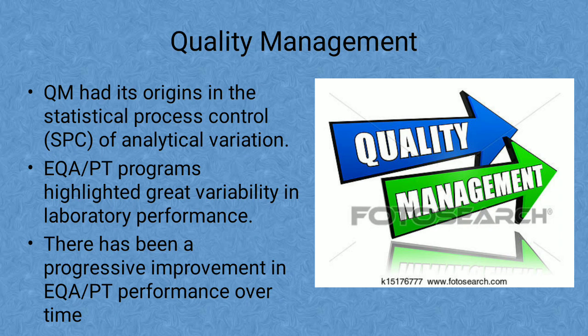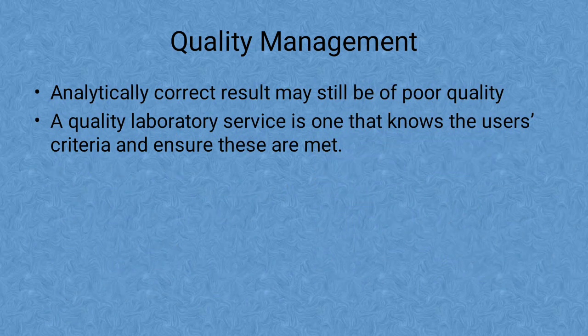Although some laboratories see their role as the delivery of analytically correct results, this is a very narrow view — one that overlooks the reality that an analytically correct result may still be of poor quality if it does not meet turnaround time, cost, delivery methods, or other user-specific criteria. A quality laboratory service is one that knows its users' criteria and needs at all times and has an internal system to ensure those are met. When user criteria change, a quality laboratory will have procedures to detect those changes and adapt itself to respond appropriately.